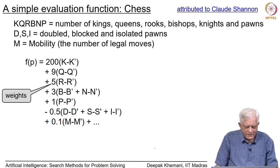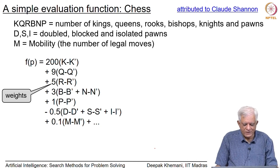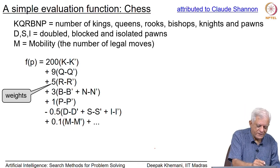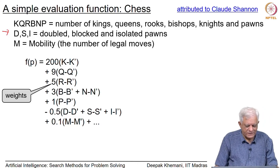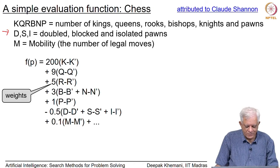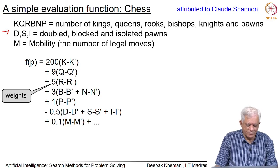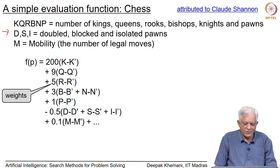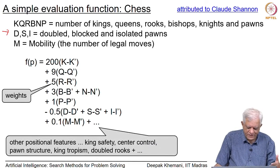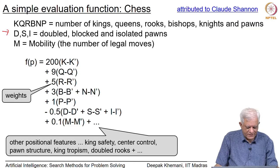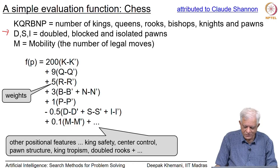Apart from material value, we also have positional value. The positional value is indicated by features D, S, and I, which talk about how the pawns are organized — doubled pawns, blocked pawns, or isolated pawns. M is mobility: the number of legal moves available to each player. More moves mean more choices and less constraint. These mobility features include things like king safety, central control, pawn structure, king tropism, double rooks, and so on, and you can devise more and more such patterns to evaluate board positions.